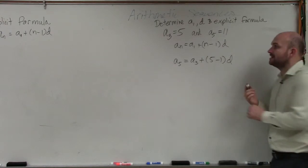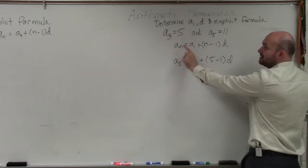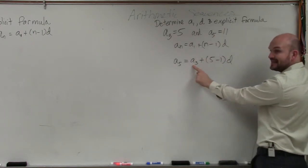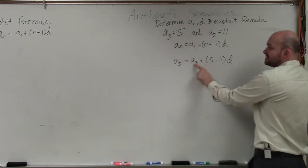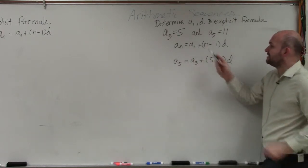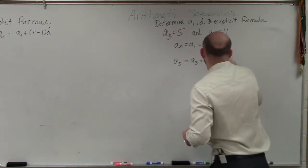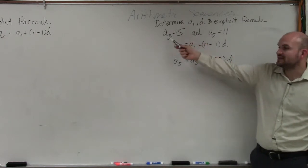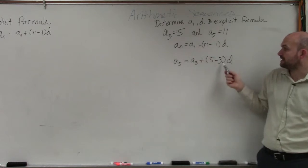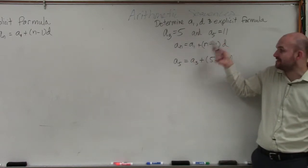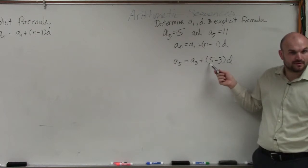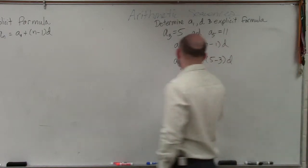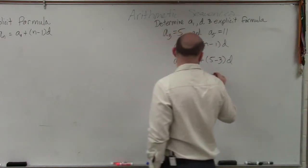Please take a look at what I've done. Instead of whatever term I'm trying to find, I've replaced that with the larger term. And instead of using A sub 1, I'm replacing that with A sub 3 because I don't know A sub 1. I've replaced all A sub 1s and the 1 with A sub 3, and replaced all Ns with A sub 5 and 5. This allows me to plug in what A sub 5 and A sub 3 are, so that becomes 11 equals 5 plus 2D.